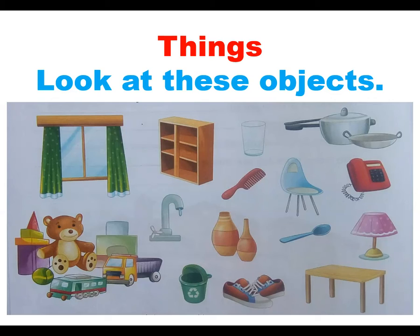Bed के पीछे क्या है? Bus. और बस के साथ क्या है? Truck. और ट्रक के पीछे क्या है? Towel. And towel के साथ क्या है? Tap. The next one is Dust Bin. Bottle. Comb.